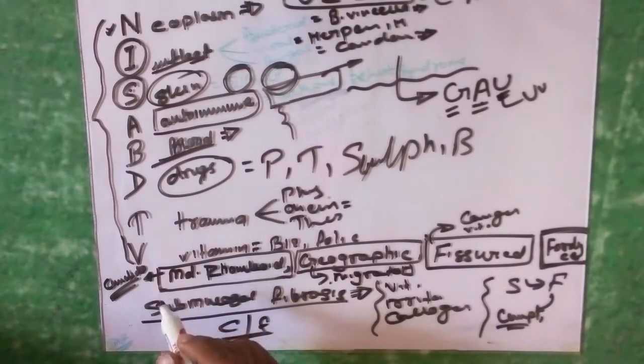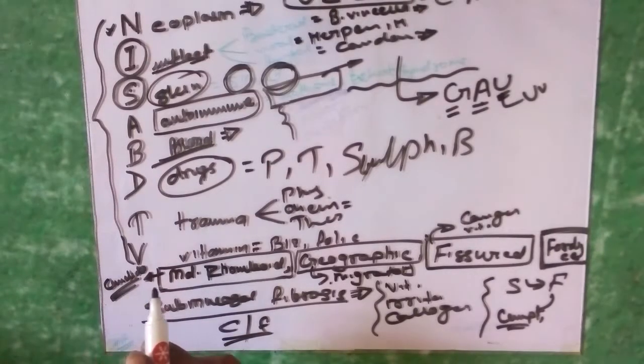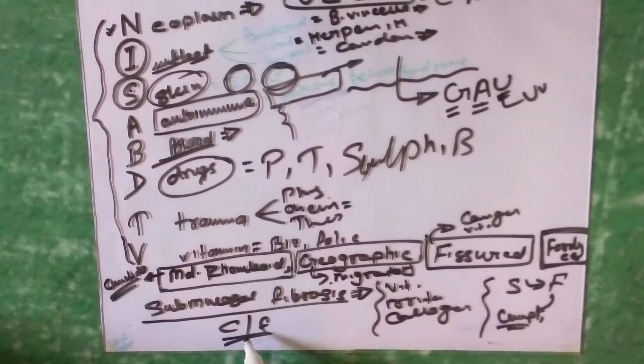How does it present? Its presentation is very classical. In early stage it usually causes formation of vesicles which may rupture and cause superficial ulcers which are red in color.